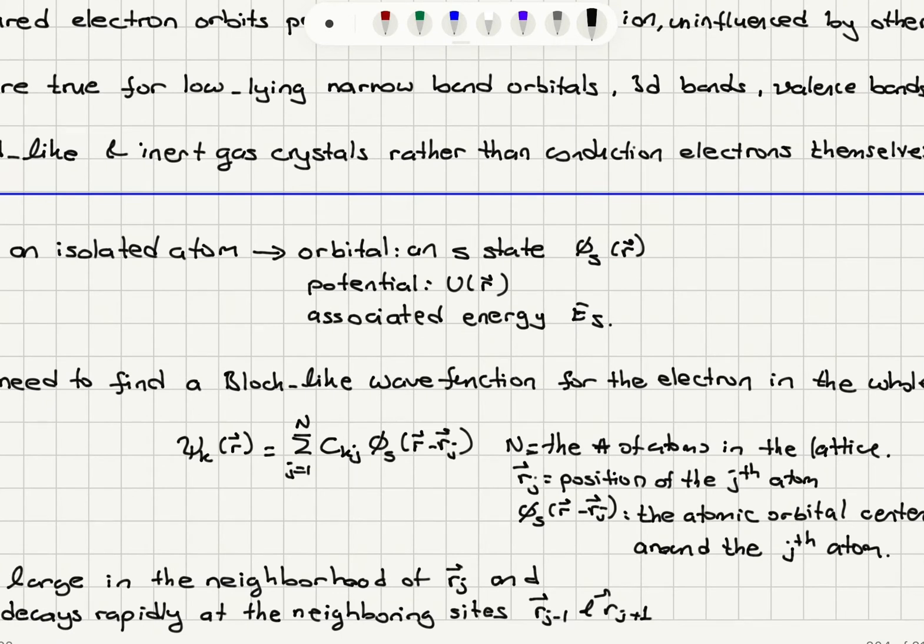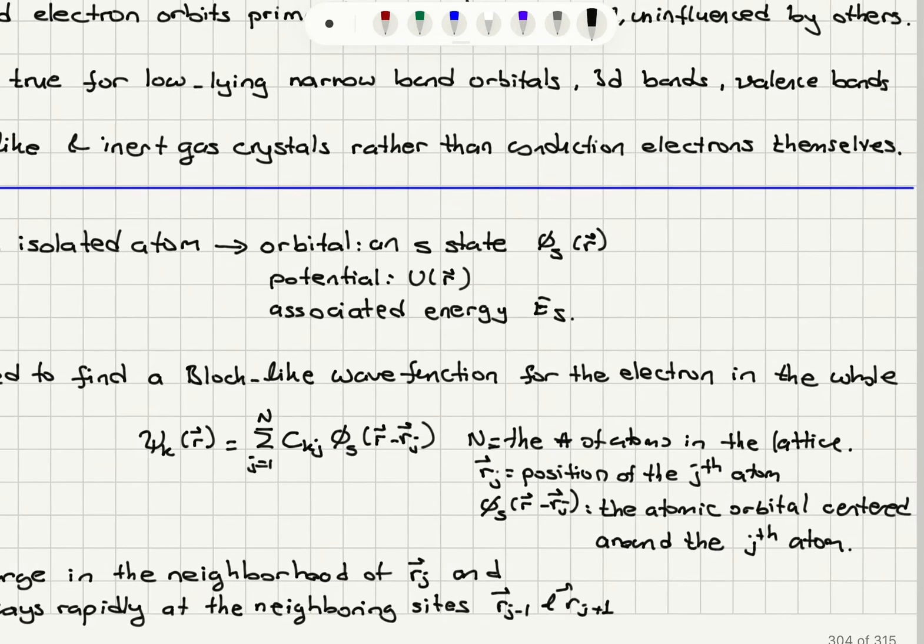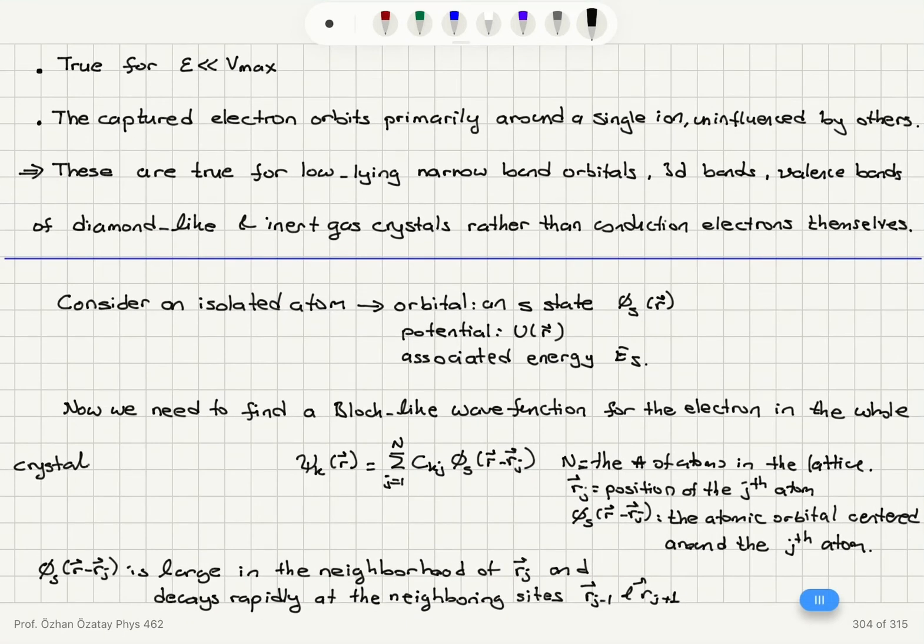Rj is the position of the j-th atom so this wave function phi s is centered around the j-th atom so it's as a function of r minus rj and with some coefficients ckj that we need to consider.